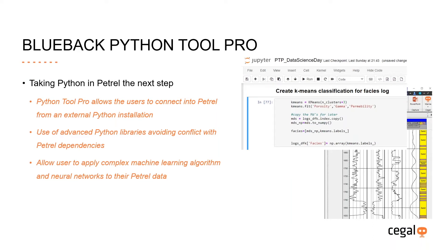Python 2 Pro has been designed to take the data science experience in and against Petrel one step further. It allows users to connect into Petrel and access Petrel data easily and efficiently from an external Python installation on platforms like Anaconda to enable the full IDE experience. It is now possible to use any Python libraries without risking conflicts on Petrel dependencies. Python 2 Pro enables users to leverage their preferred machine learning algorithms, neural networks, research code, and data science workflows against their Petrel data.